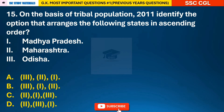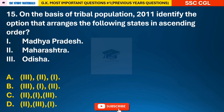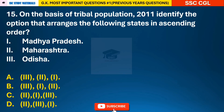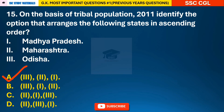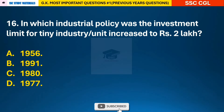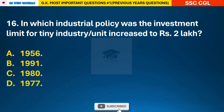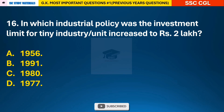Question 15: On the basis of tribal population 2011, identify the option that arranges the following states in ascending order — answer A: the states in ascending order are Odisha, Maharashtra, and Madhya Pradesh. Question 16: In which industrial policy was the investment limit for tiny industry or unit increased to rupees 2 lakh? — answer C: 1980.